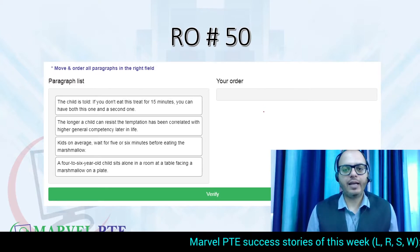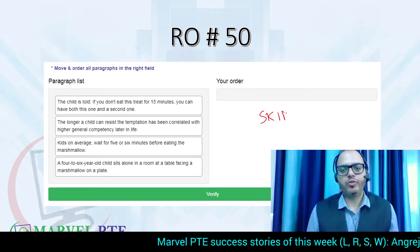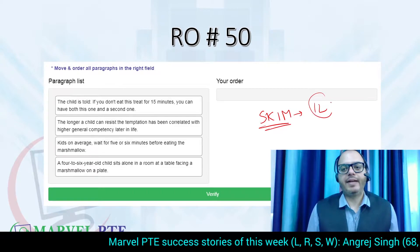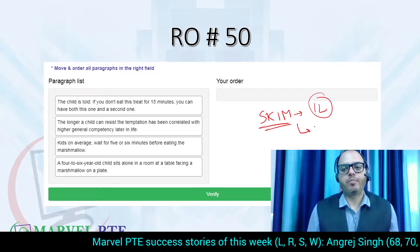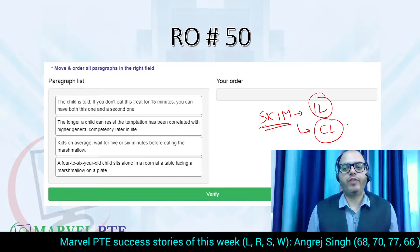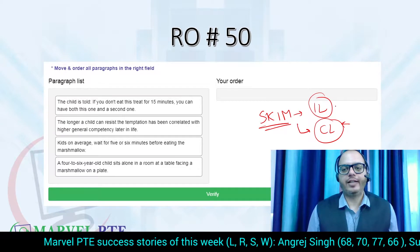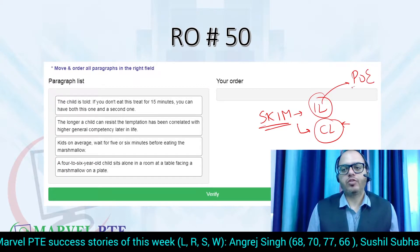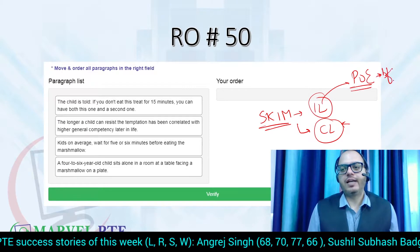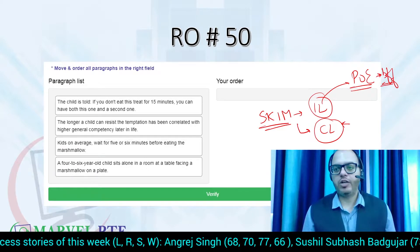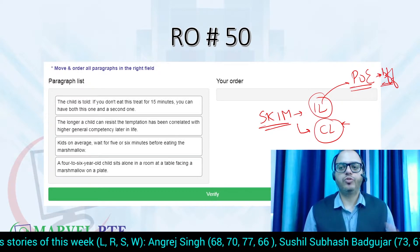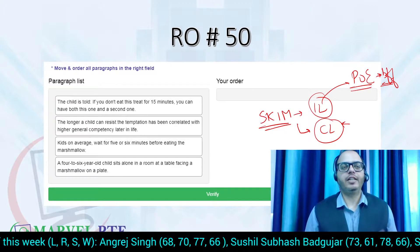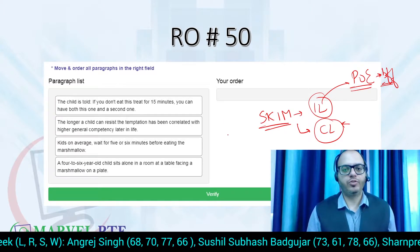Now you have to do the skimming — find the independent line and, if possible, also find the concluding line. For the independent line, we use the process of elimination. I call this our best friend forever, because it helps you identify which answers are wrong and which lines cannot be independent, allowing you to eliminate those options.